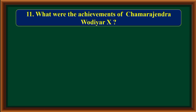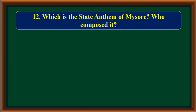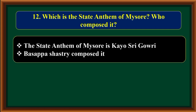What were the achievements of Jama Rajendra Vadiyar 10th? During his period, the Mysore representative assembly was established, and gold mines in Kolar and the Bangalore-Mysore Railway lines were established. He gave shelter to Vivekananda when he came to Mysore and helped him participate in the Parliament of World Religions at Chicago. As he had a love towards Kannada and Sanskrit, he patronized many scholars. Basapa Shastri was important among them, having written many books and known as Abhinava Kalidasa. Basapa Shastri composed the State Anthem of Mysore, Kayo Shri Gauri.